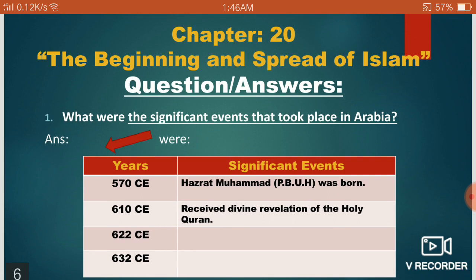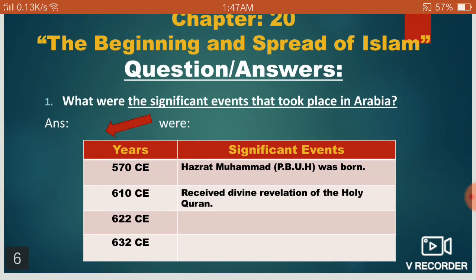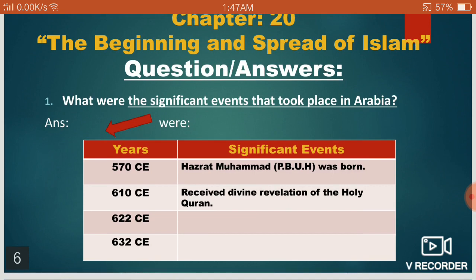Question number one is: what were the significant events that took place in Arabia? 'Significant' means important events. First, you take a line from the question — just like I've underlined — 'The significant events that took place in Arabia were.' After that, it's up to you: you can write in the form of a table or in points. I've made a table to make it easy to learn and understand.